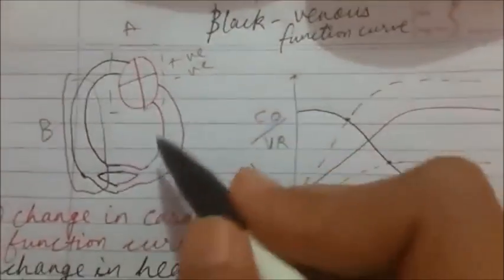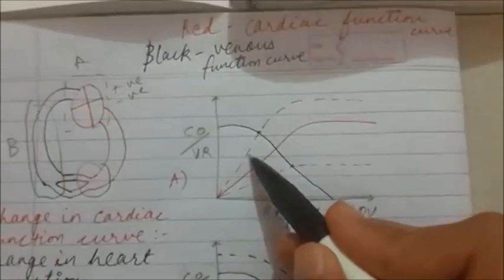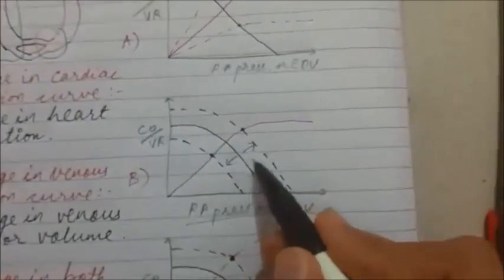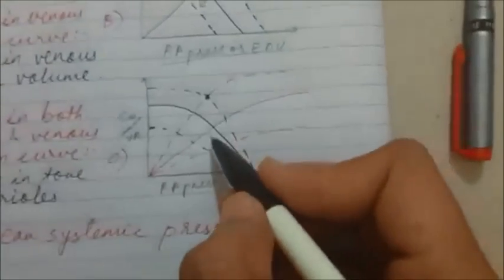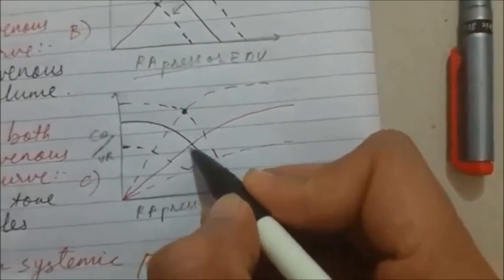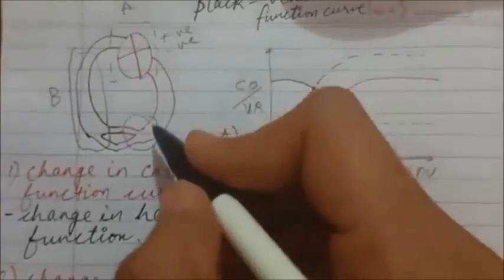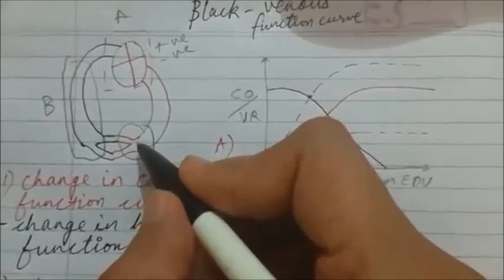The last part of the circulatory system is the arterioles, or the arterial side. If there is a change in the cardiac function curve, it is always related to the heart. If there is a change in the vascular function curve, it is always related to the venous side. But if there is a change in both the vascular function curve and the cardiac function curve, it is always related to the arterioles — that is, a change in total peripheral resistance.